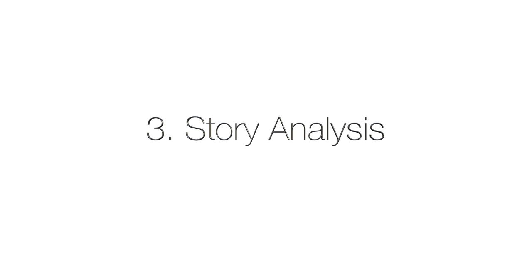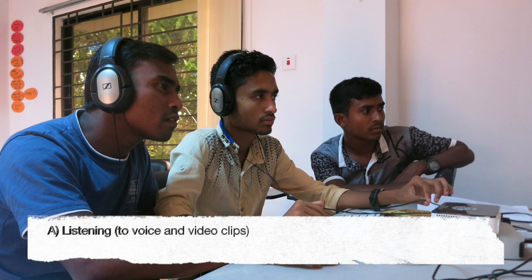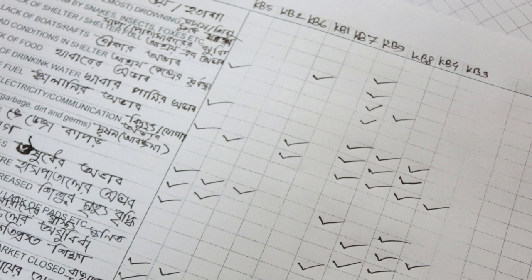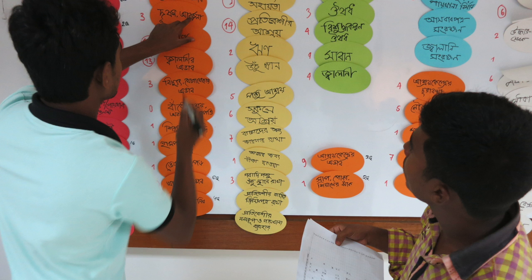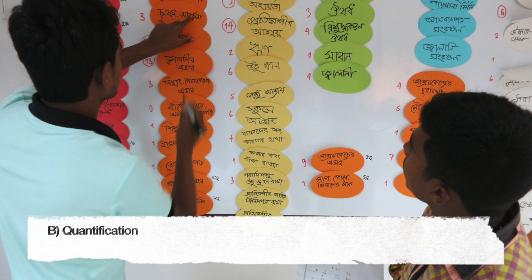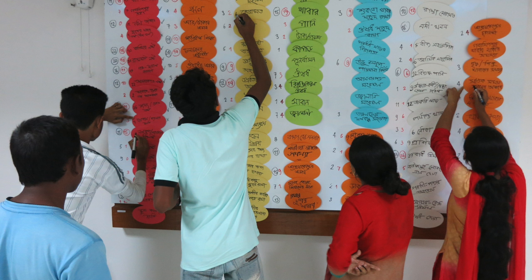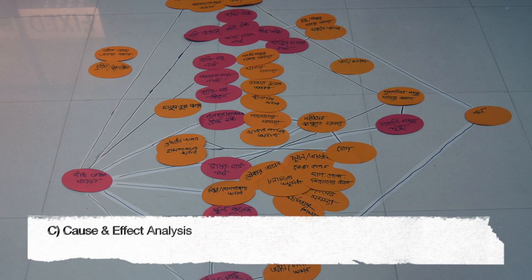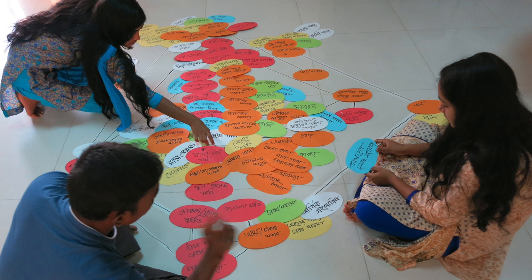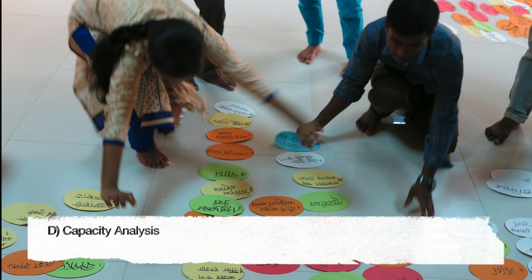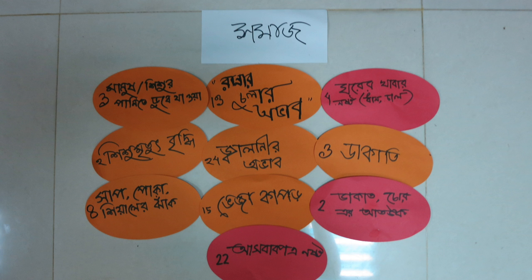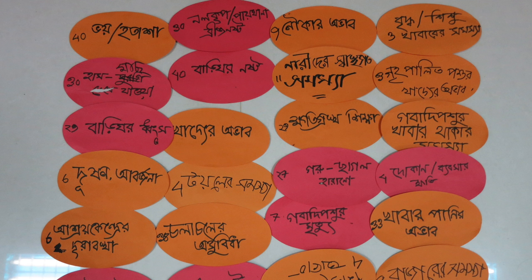Phase 3: Story Analysis. After giving each storyteller a code, the team listens to and analyzes all of the stories that were collected, by using an analysis table. The team uses these tables to identify which problems, enablers and ideas were most often expressed by the community participants. After that, a visual cause and effect analysis is used to better understand the relationship between the various problems and enablers. Next, the team identifies what problems their community could address themselves, which problems are beyond their power to influence, and which issues they could address with the support from outsiders.